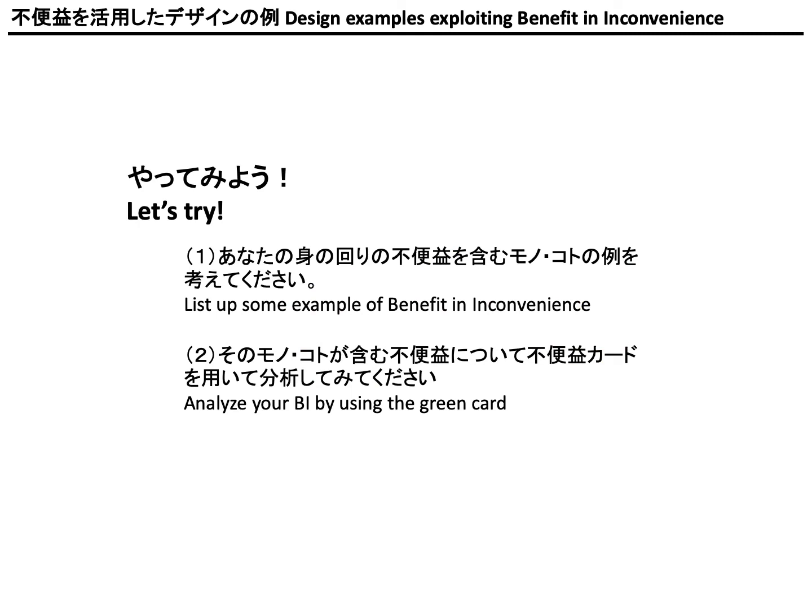I think the easiest way to understand this strategy is to find benefit in inconvenience around you by yourself. What you need to do now is just to list up some examples of benefit in inconvenience, then analyze the benefit in inconvenience which you could recognize with respect to the green cards.